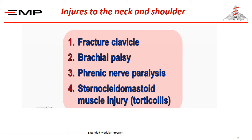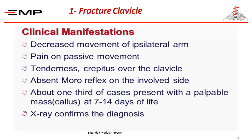Part 2: injuries of the neck and shoulder, including fractured clavicle, brachial plexus injury, phrenic nerve paralysis, and sternomastoid muscle injury. Fractured clavicle usually presents with decreased movement of the ipsilateral arm, pain on movement, tenderness, and absent or weak Moro reflex on the affected side. It resolves spontaneously with support within 7 to 14 days. X-ray confirms the diagnosis.